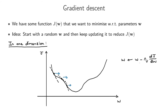Just some terminology: the eta variable, which determines how big a step you're going to take, is called the learning rate. Now let's stay with the one-dimensional case and see what types of problems we might run into with gradient descent.